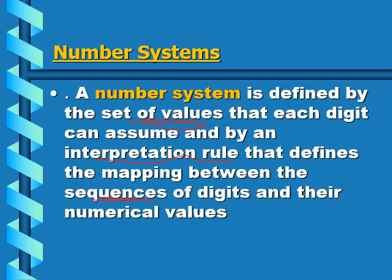Let's say we have a number 125 and another number 251. As you can see, we have digits one, two, and five for 125, and two, five, and one for 251. Both of these numbers have the same numerals — one, two, and five.